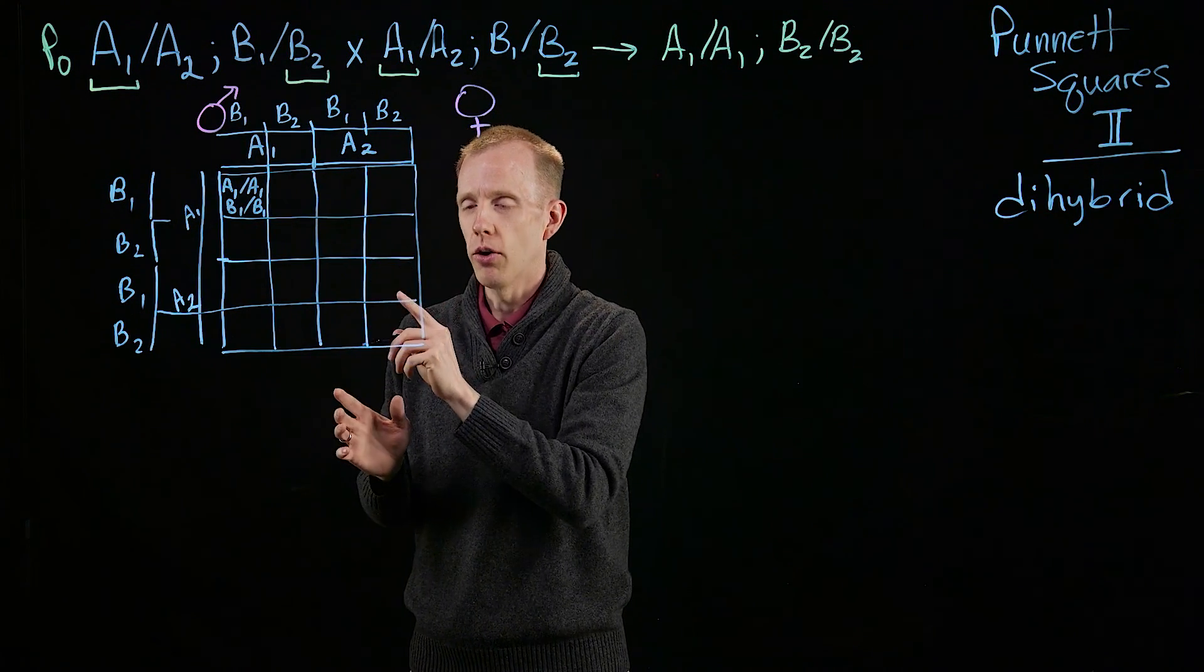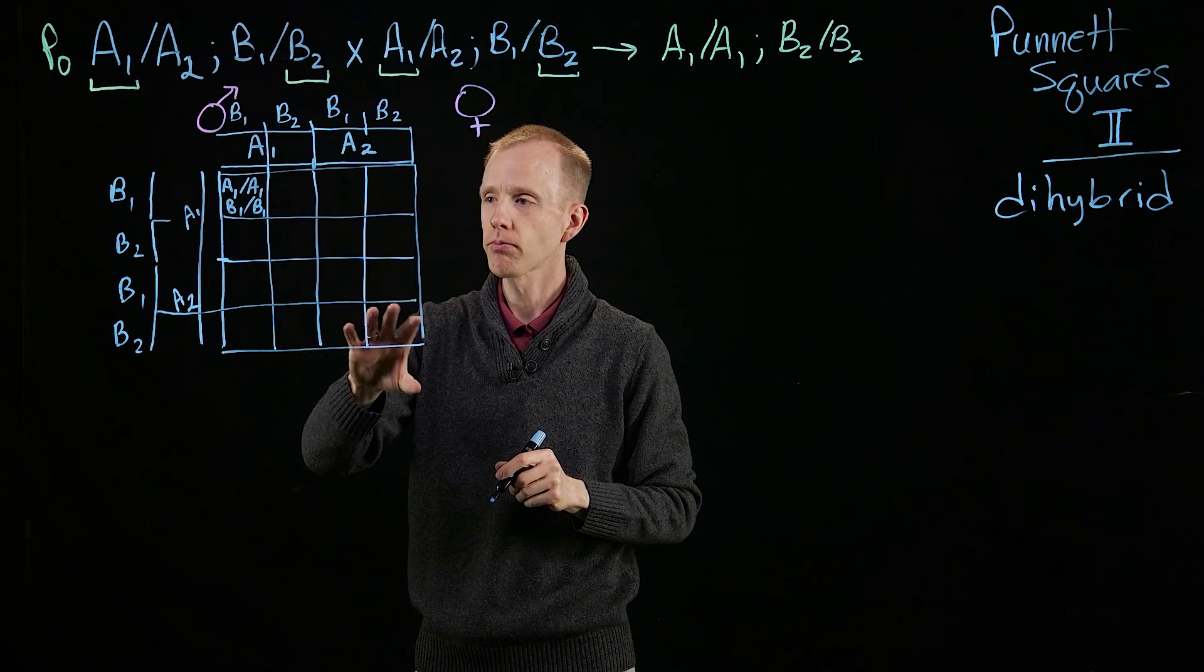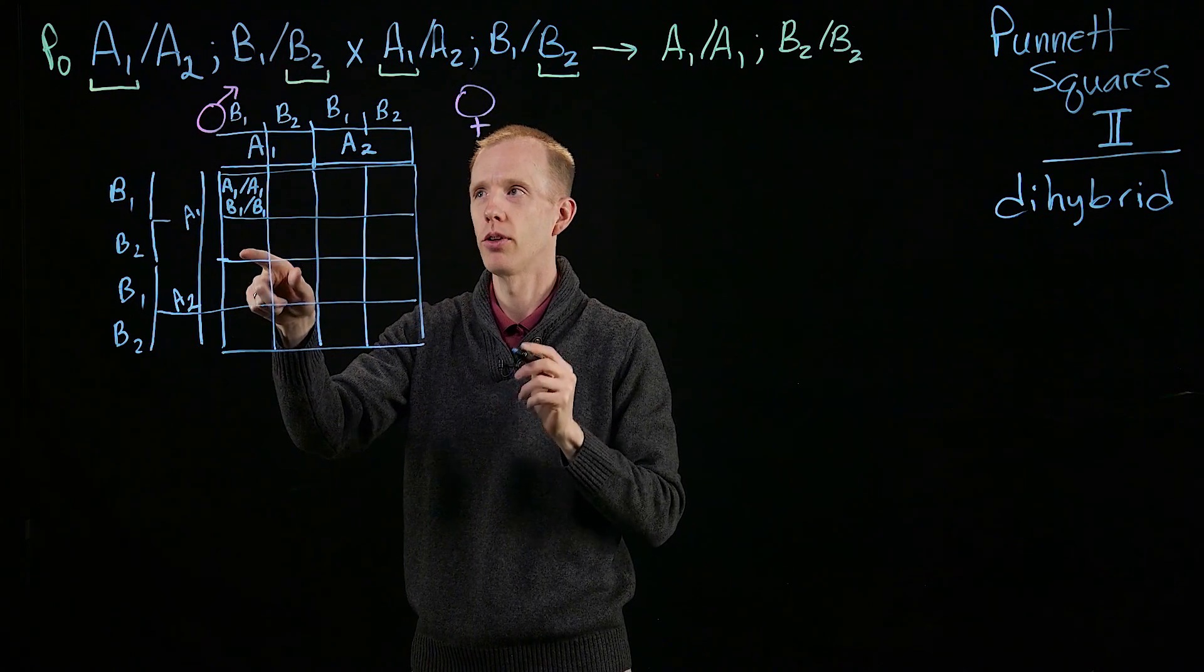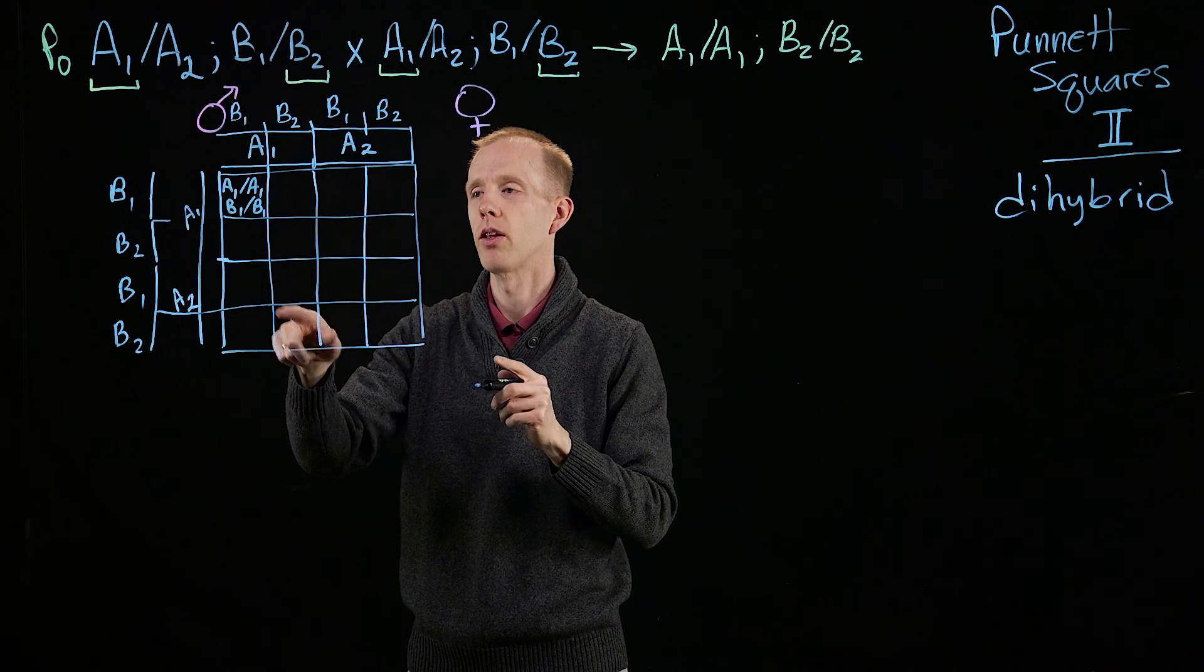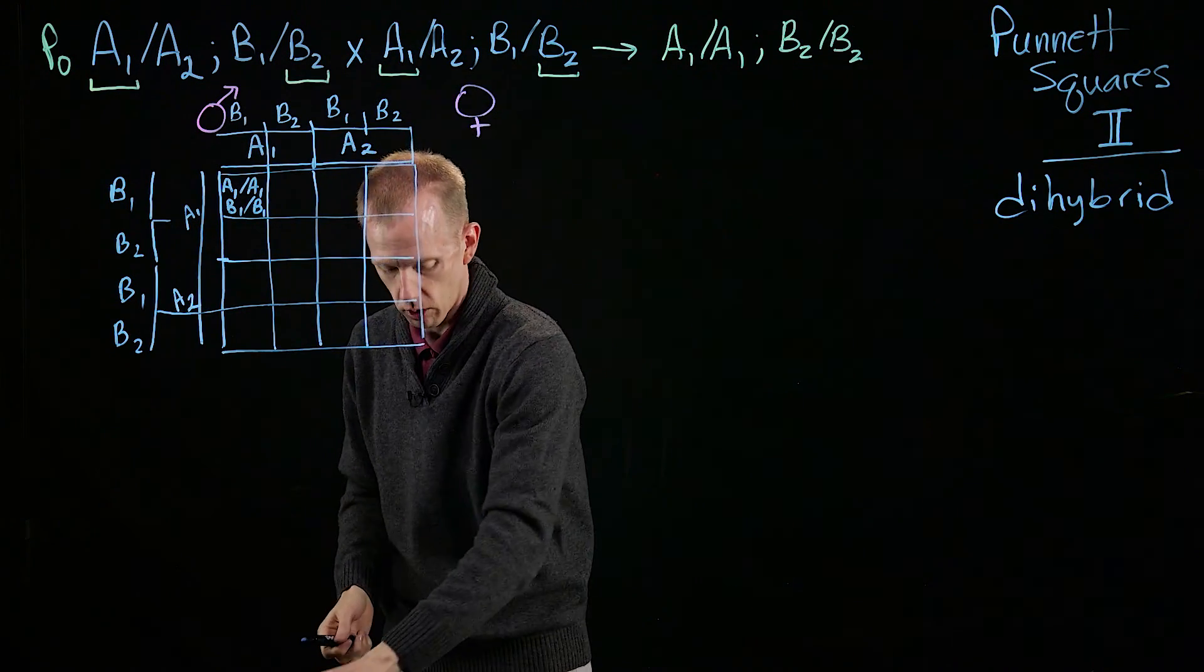And you'll see when you fill this out, which I encourage you to do, this is a good practice. Fill this out with each genotype of each of the F2 offspring. Well, in this case, these are F1 offspring, because this is a P0 cross, so we'll call these F1.